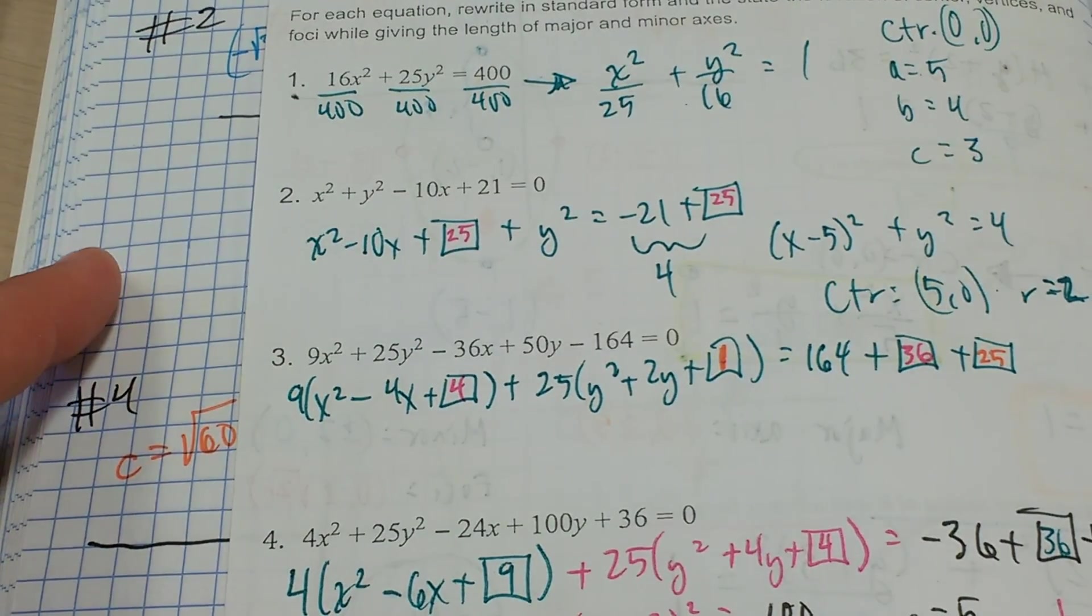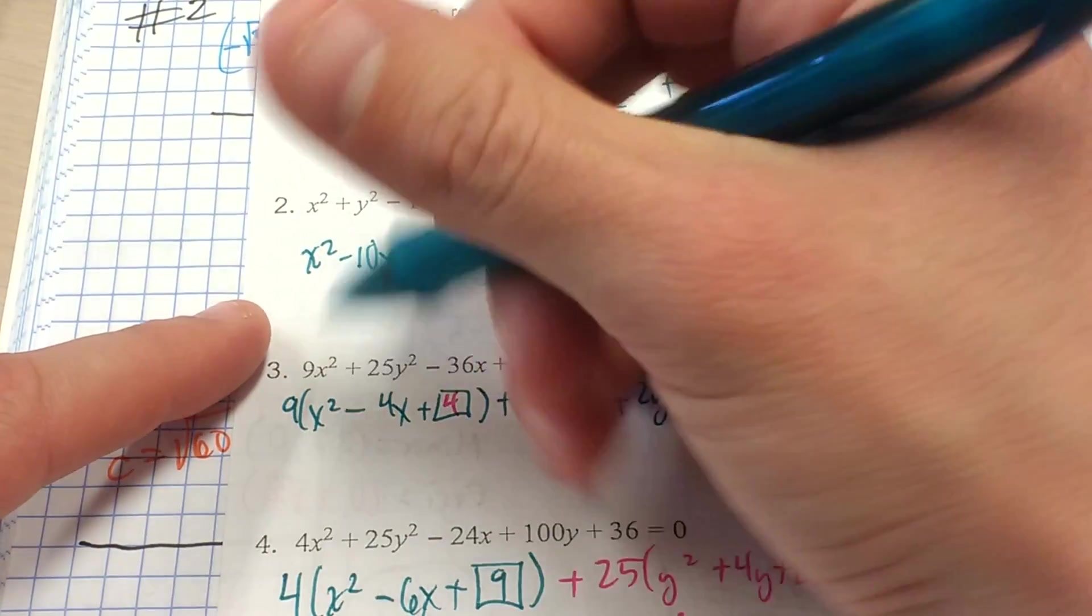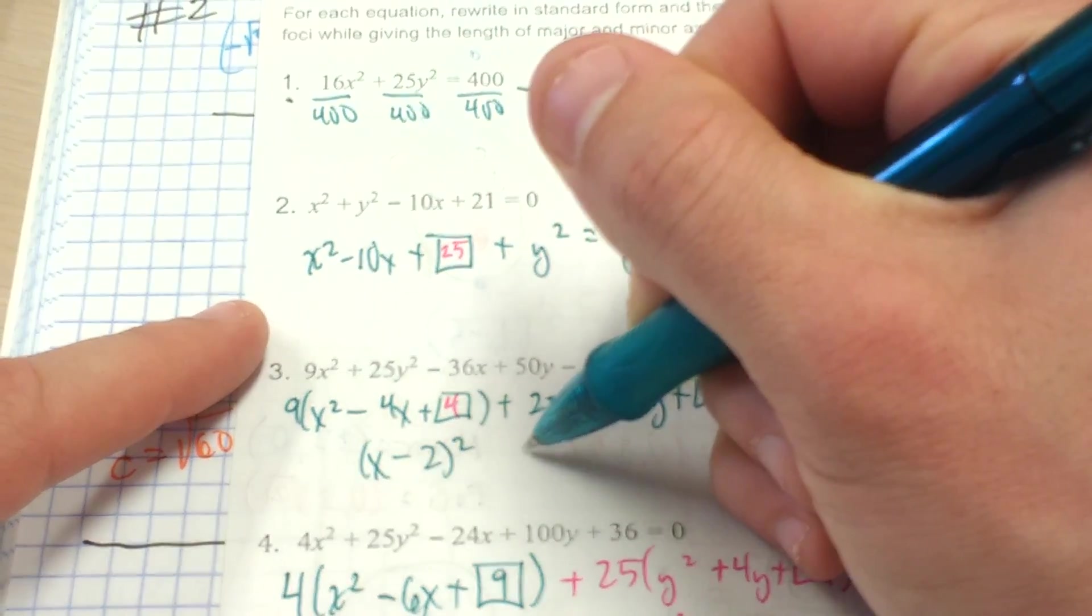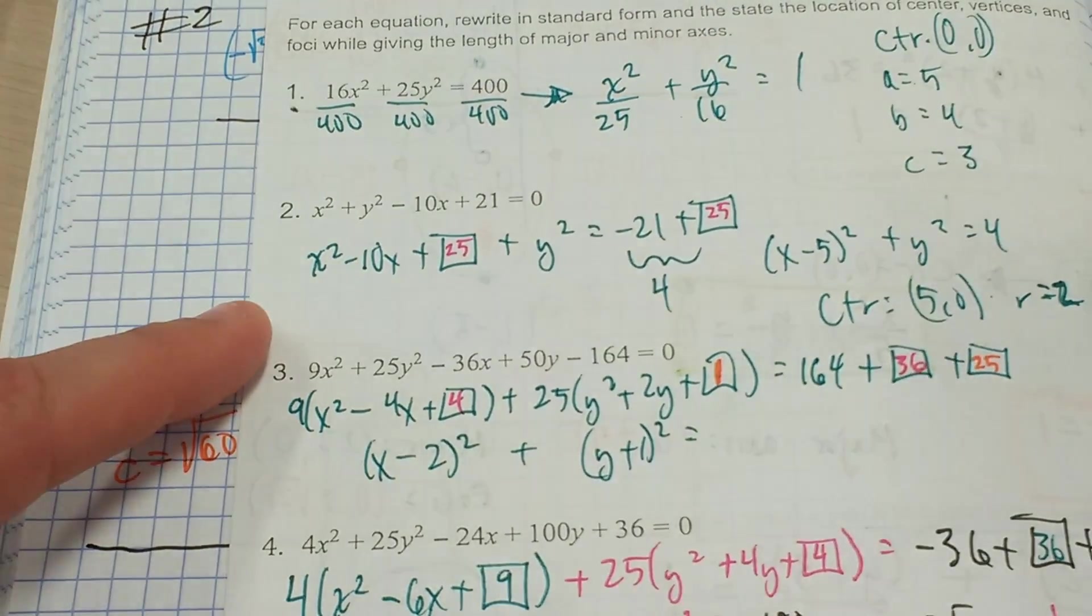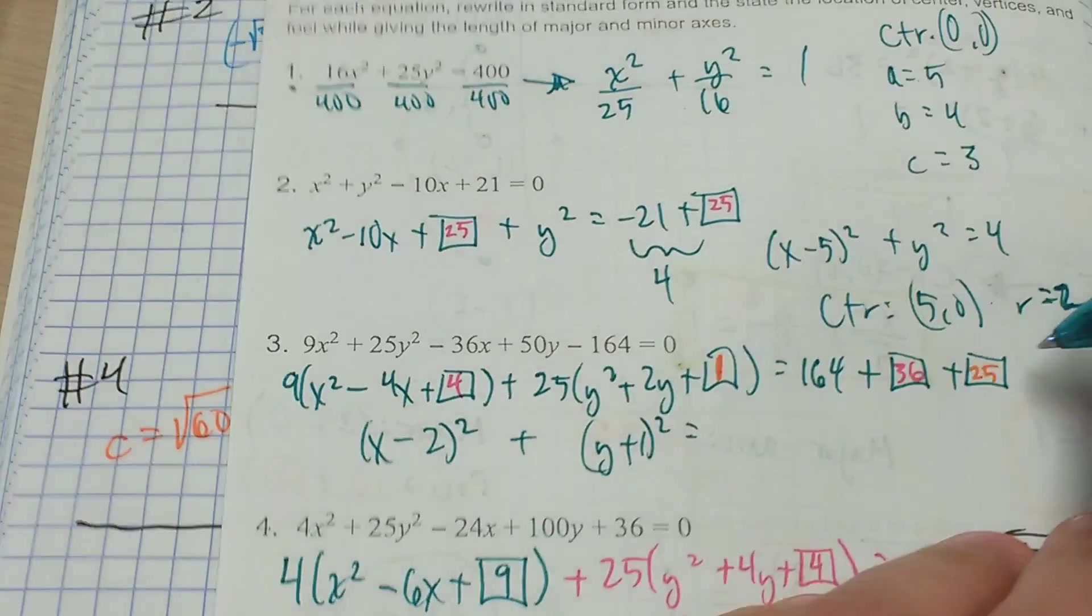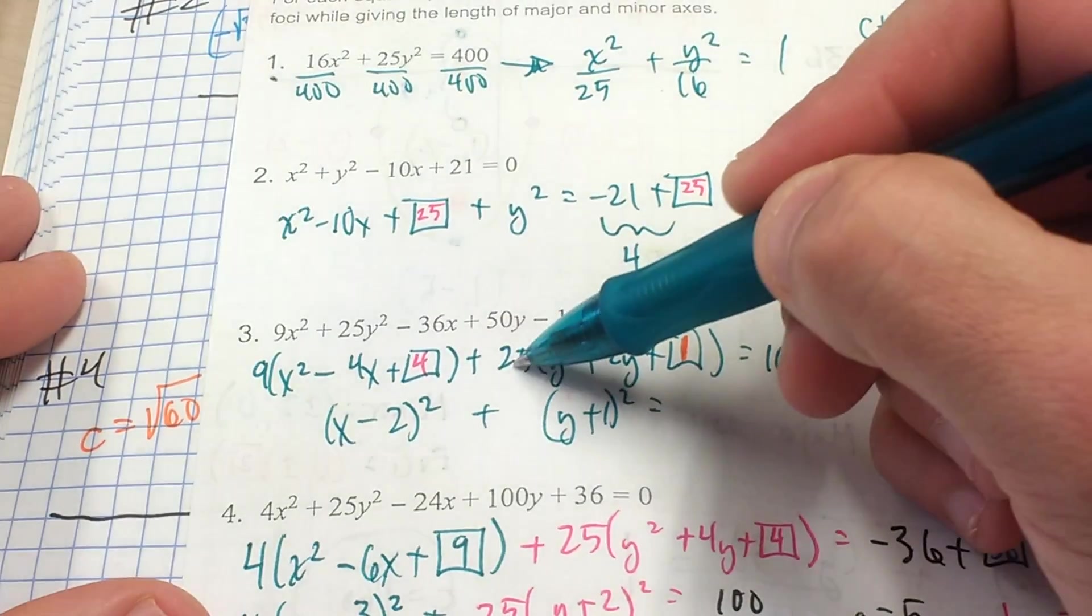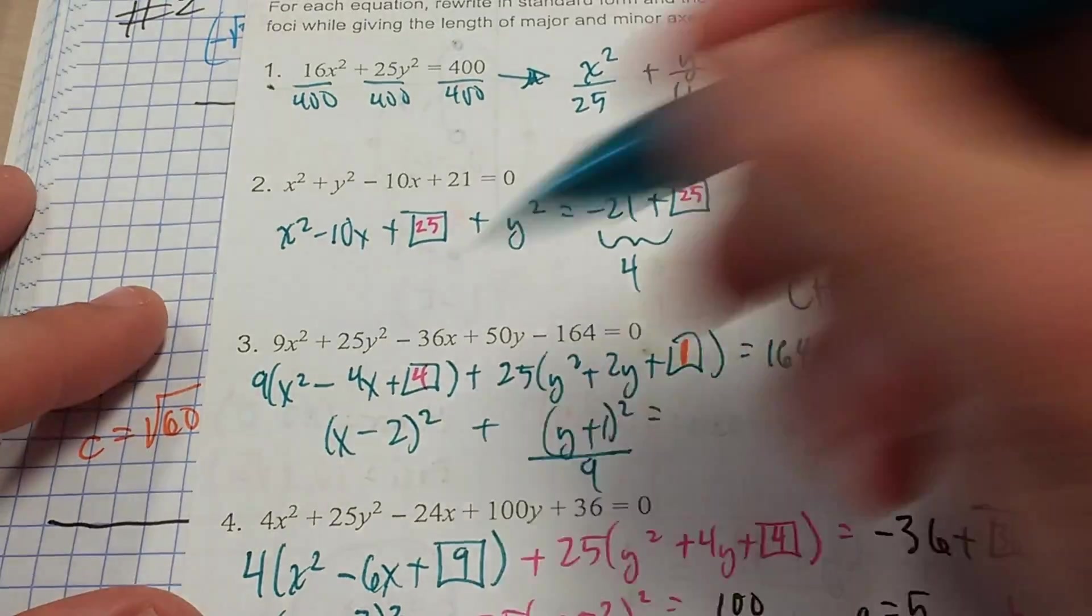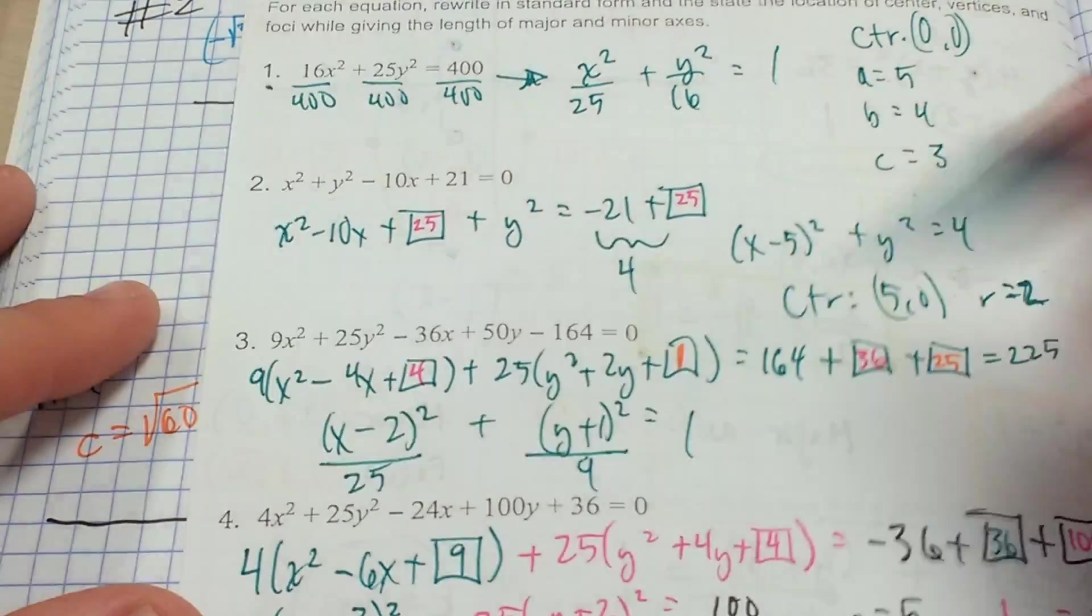How do we take this and turn it into standard form? We're going to go ahead and say that's going to be x minus 2 squared. This is going to be y plus 1 squared. And now at the end of this, this is actually equal to 225. So what I would do is divide both sides by 225. So I've got a 225 underneath here. That means I'm going to have a 9 here. I'm going to have a 25 here. All that equal to 1.